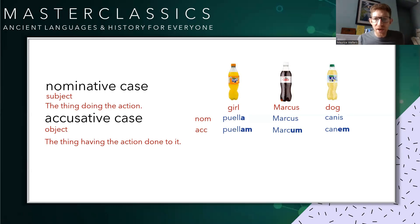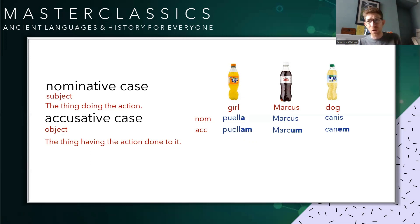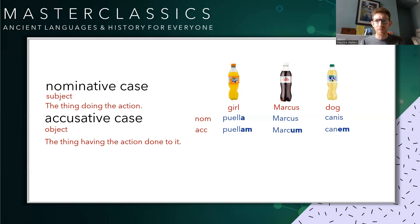We also explored the fact that our nouns have different flavours, a bit like the crisps with the verbs. Well, nouns we use soft drinks for. So Fanta is our first declension noun set — it's everywhere, it's easily accessible. We talked about second declension nouns like Diet Coke — difficult to get in Europe — and then Lilt for the third declension. So those families go together, but they still do the same things; they just have slightly different endings on their nouns.